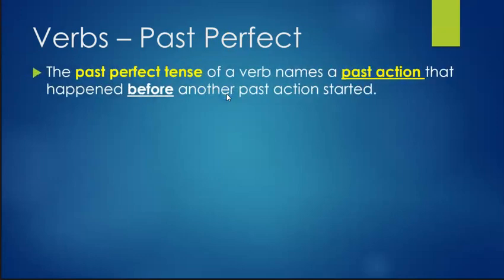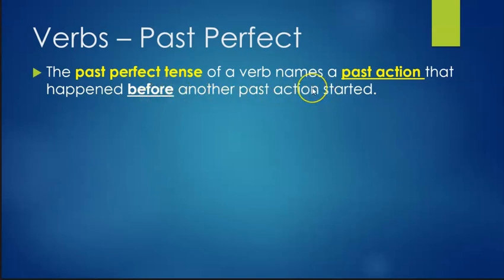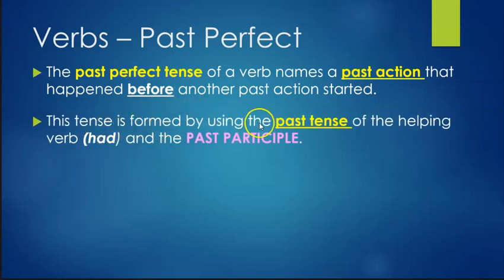Past perfect is again a past action. We use it when you have two actions that happened in the past — we use it for the one that happened first. It's further back, happening before another past action. On a timeline, the action furthest back gets past perfect; the nearer past action just uses simple past tense. This tense is formed by using the past tense of the helping verb — had — and then the past participle of your main verb.